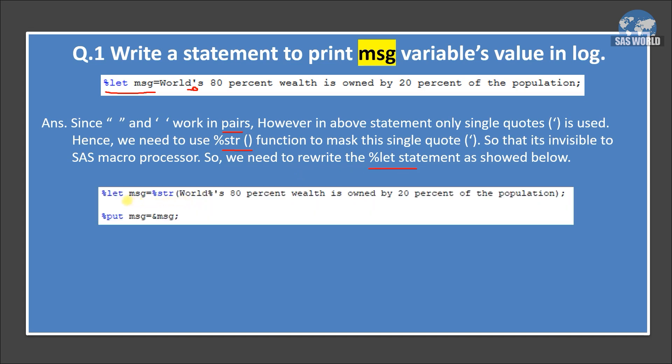So we need to rewrite the percent let statement with percent str function. So here is the statement we are writing. It is same, but now we are using percent str function. And whatever character we want to mask, we need to put percent symbol before that. So here you can see single quote or apostrophe we want to mask. So we have applied percent before that. And then we are printing this MSG variable in log. So we are using percent put and ampersand percent MSG.